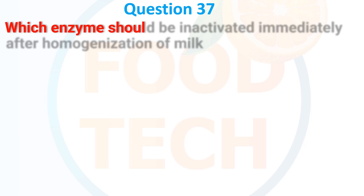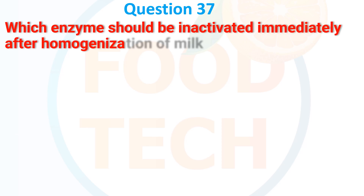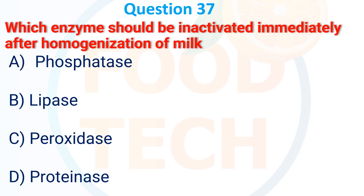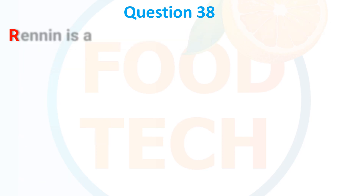Question 37. Which enzyme should be inactivated immediately after the homogenization of milk? A. Phosphatase. B. Lipase. C. Peroxidase. D. Protease. The correct answer is B: lipase.